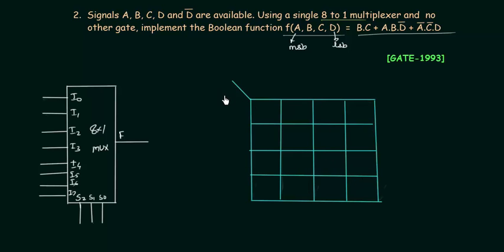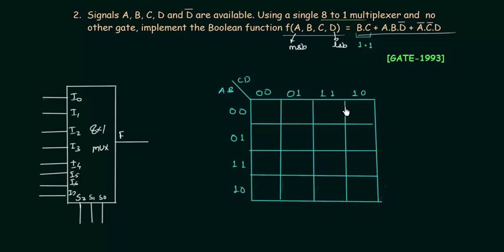This is the 16-cell K-map with a as the MSB and d as the LSB, with column groupings 00, 01, 11, 10 and row groupings 00, 01, 11, 10. We fill the map using the Boolean function. For the first product term bc: b=1 for the 2nd and 3rd rows, and c=1 for the 3rd and 4th columns, so those 4 cells get 1. Similarly, fill the remaining cells using the 2nd and 3rd product terms to complete the K-map.